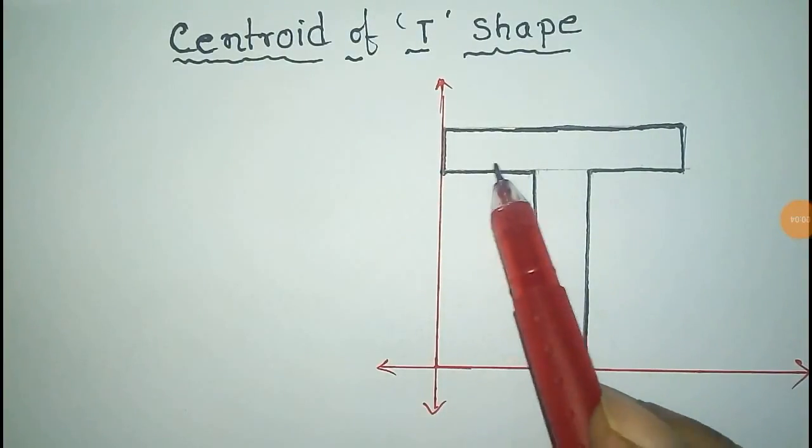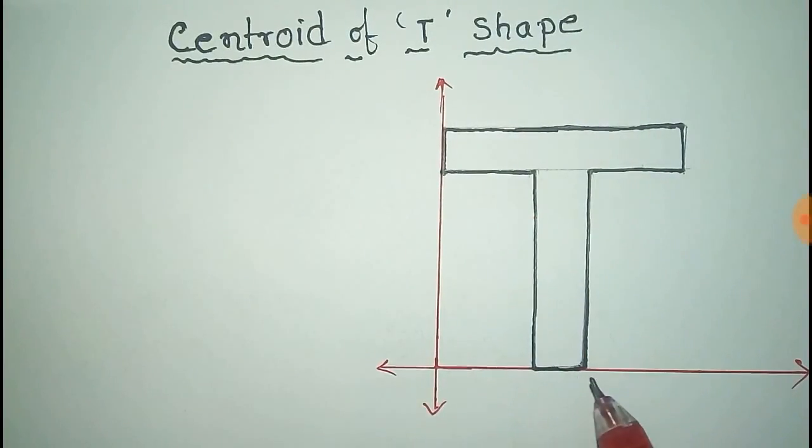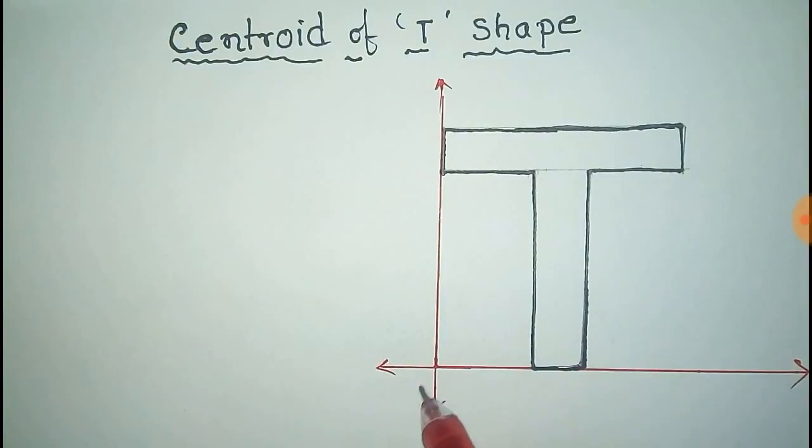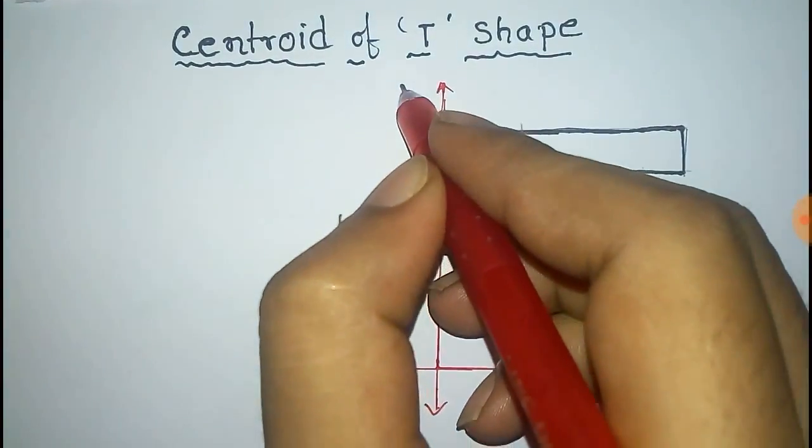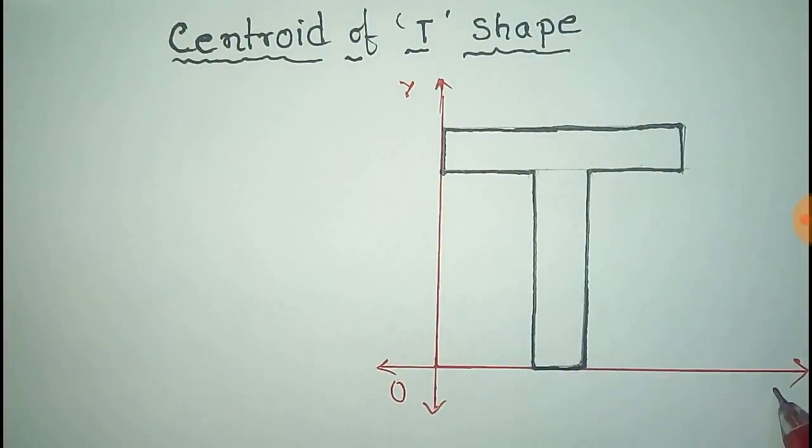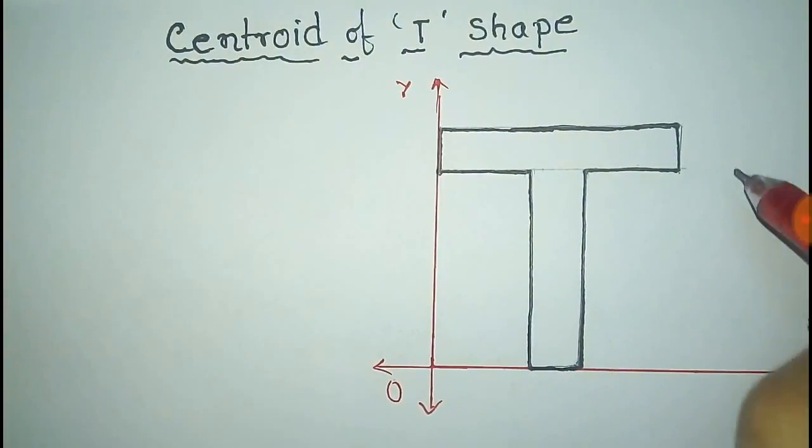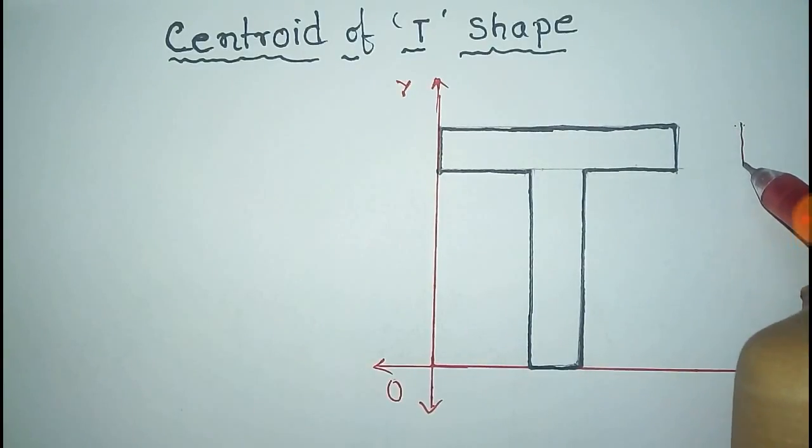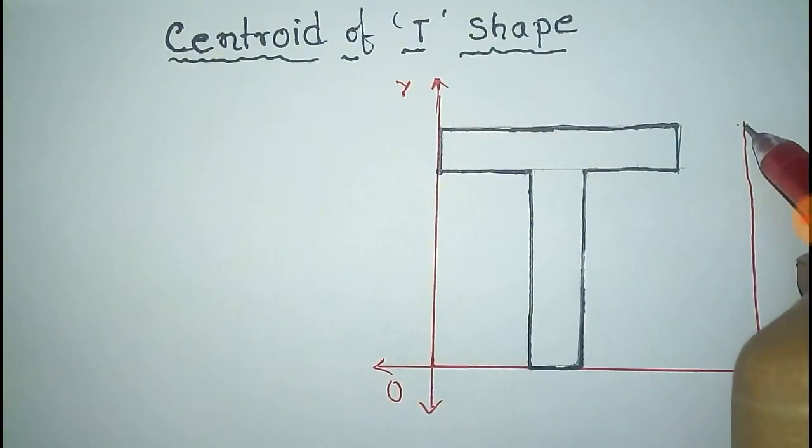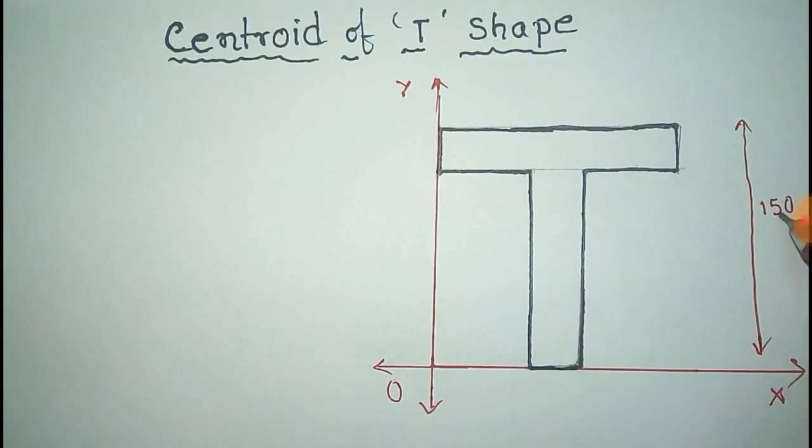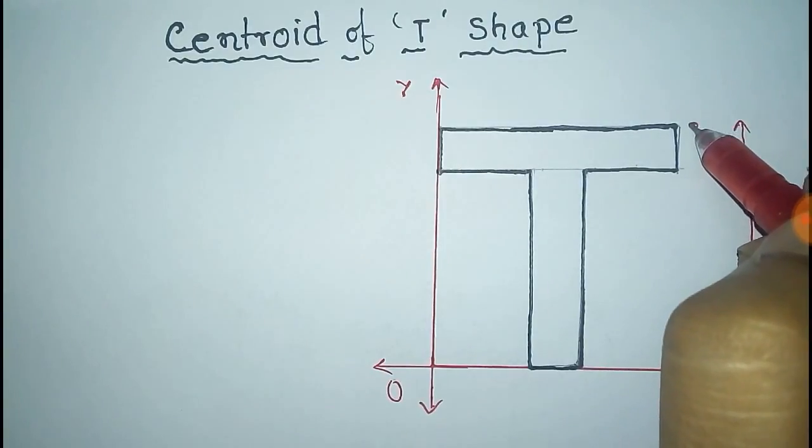We have to find the centroid of this I-section. For this, we use a coordinate axis - this is the y-axis and this is the x-axis. The total length is 150 units, and this length is given by 50 units.